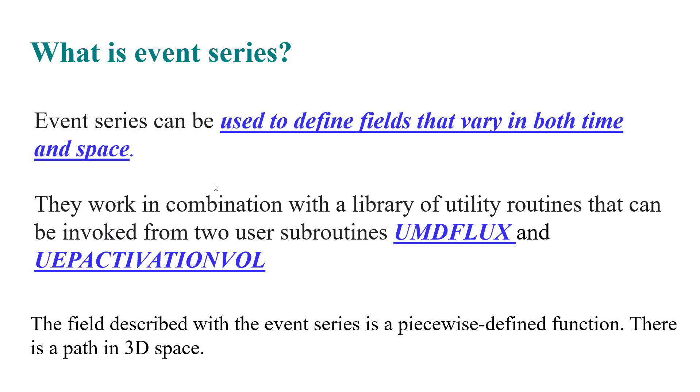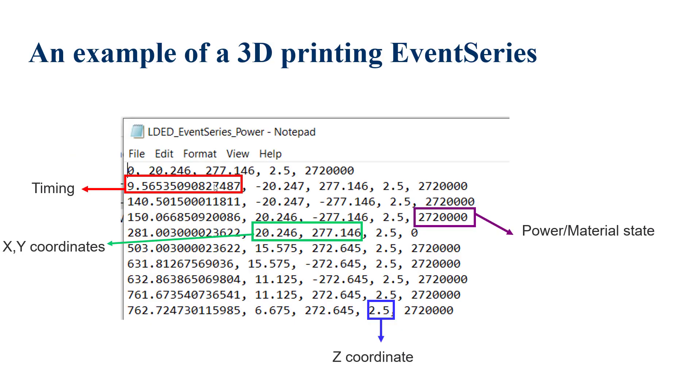Here is an example of an event series. You can see in each line there are four numbers. The first number refers to the time, and the second, third, and fourth are about X, Y, and Z location at the specific time that is put before them.